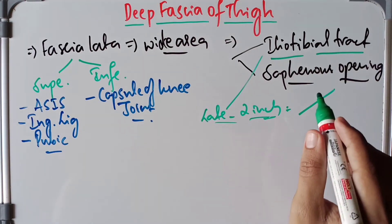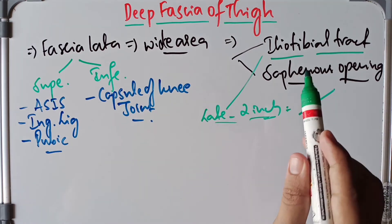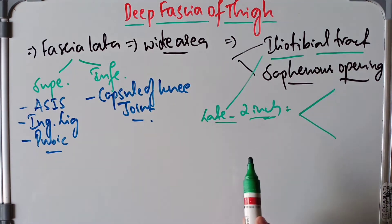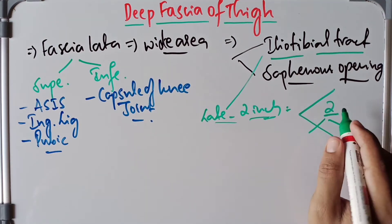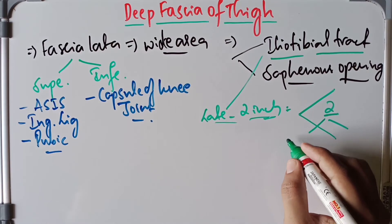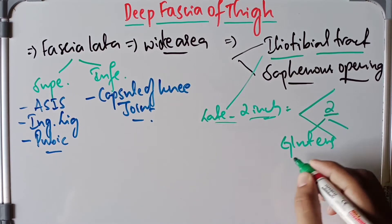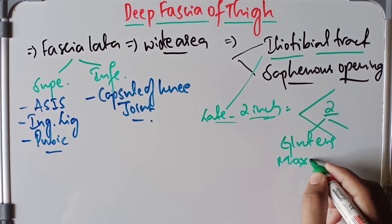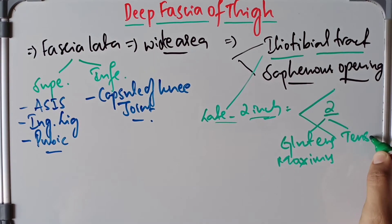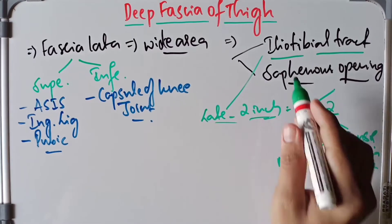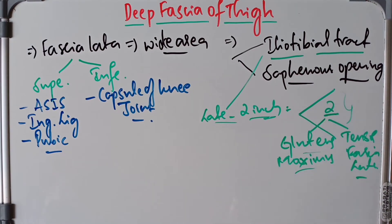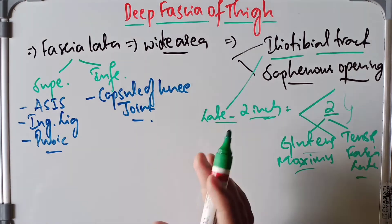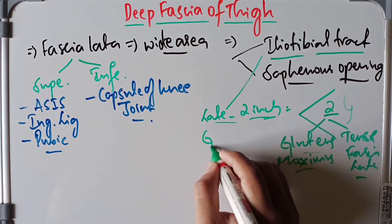Superiorly, along the iliac crest, this tract splits into two layers to enclose two muscles. Those two muscles are the gluteus maximus and the tensor fascia lata. So superiorly it splits into two layers and encloses these two muscles, and therefore it forms a thickened sheet.